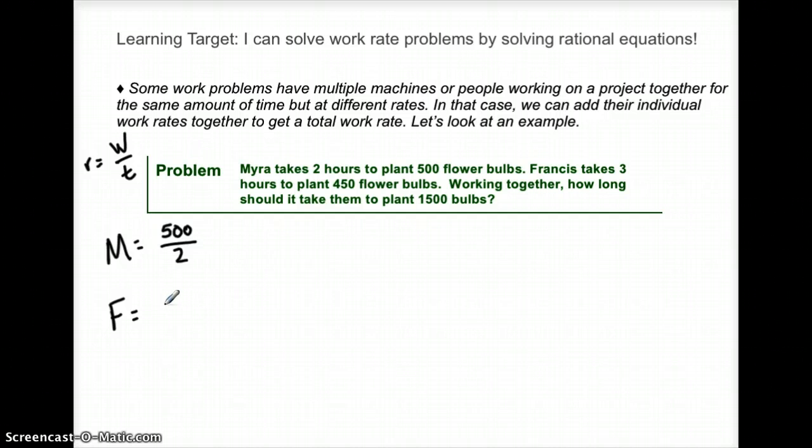Francis takes three hours to plant 450 bulbs, so Francis' work rate is 450 divided by three.